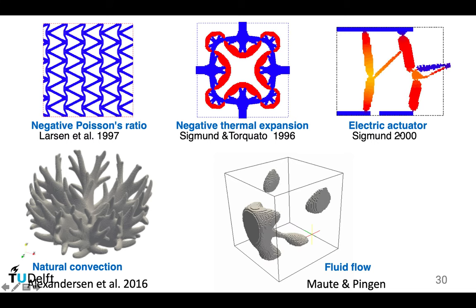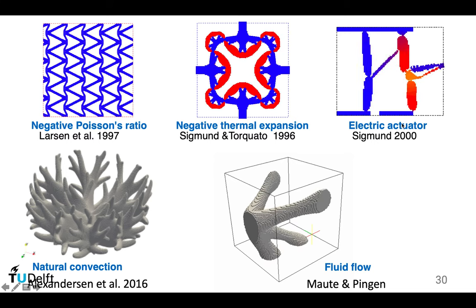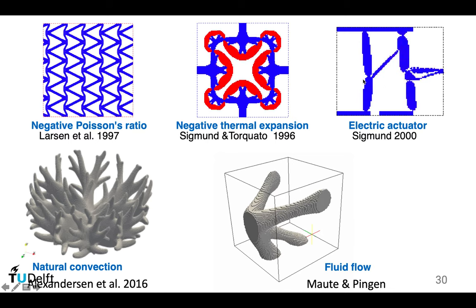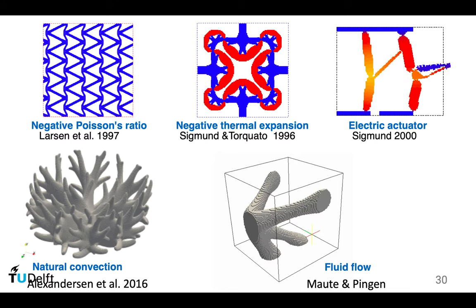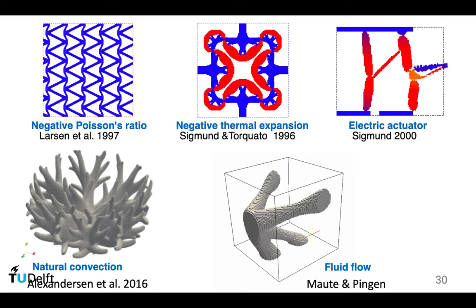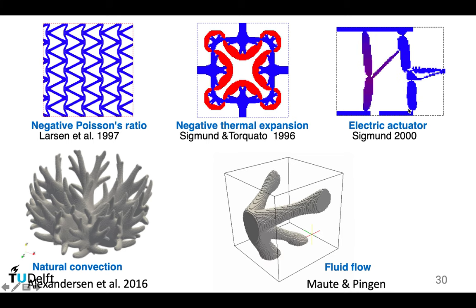The right hand side shows an electrical actuator designed to move first to the right hand side, then upwards. This is very useful for MEMS. At small scales it is very difficult to assemble structures, so it is good to have the actuator in one piece. Here is a compliant structure in one piece actuated by electricity, making assembly unnecessary.